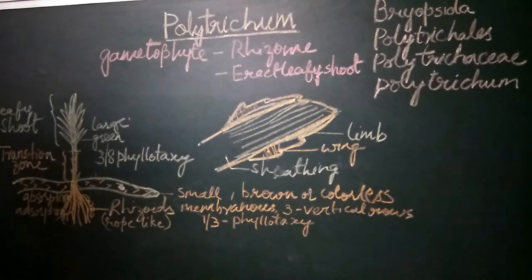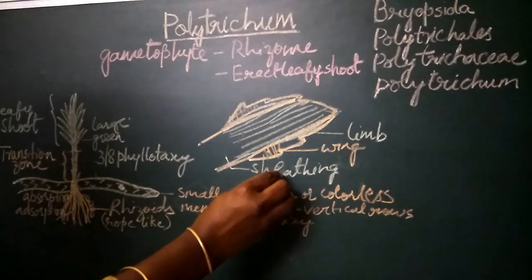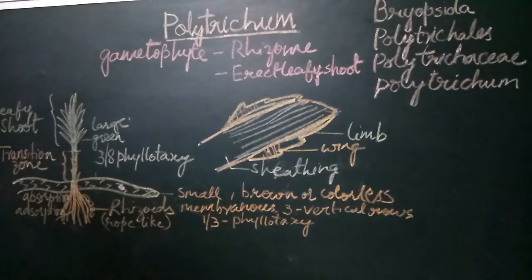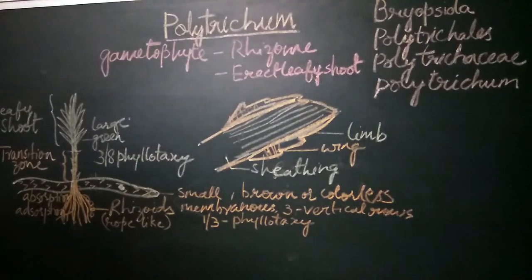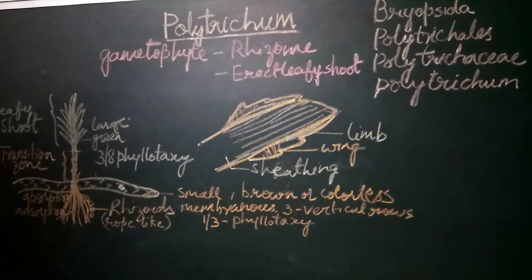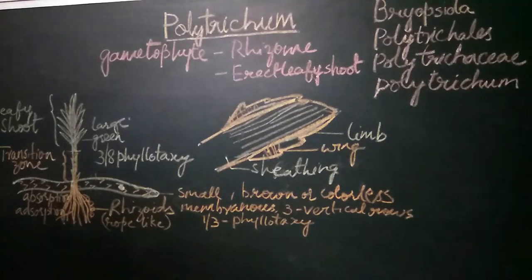Because of this efficient functioning of the rhizoids, some Polytrichum plants are able to survive even in slightly drier conditions. The rhizoids also help in vegetative propagation. In certain species of Polytrichum, we find small gemmae or bud-like structures on the rhizoids which help in vegetative propagation of the plant.